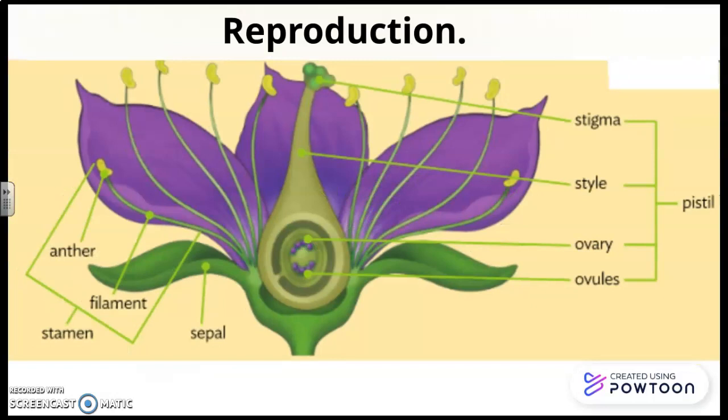Reproduction. Here you are the parts of a flower. We've got the pistil with the stigma, the style, the ovary and the ovules, and the stamen with the anther, filaments, and also the sepals.